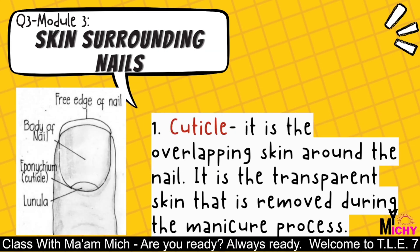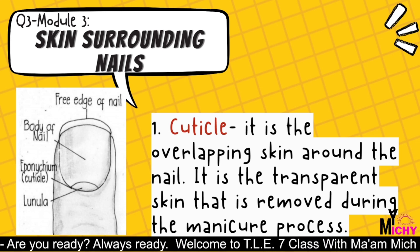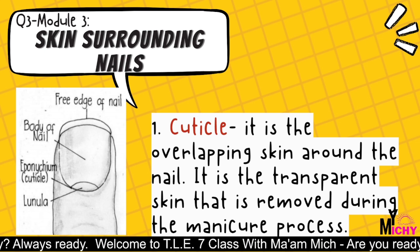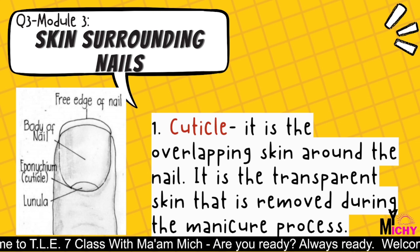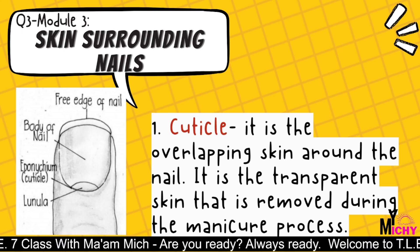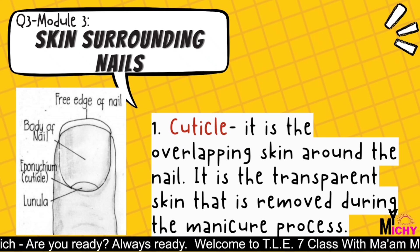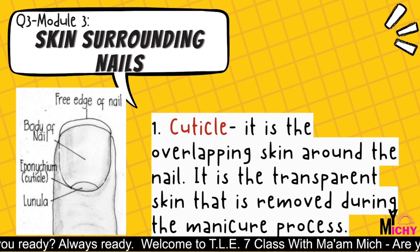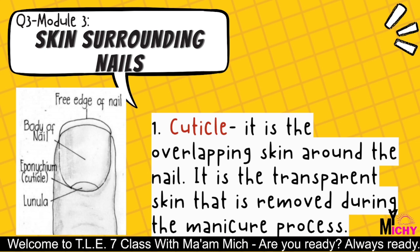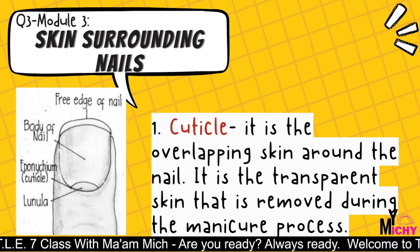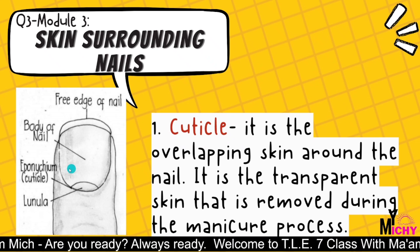The cuticle is the overlapping skin around the nail. It is the transparent skin that is removed during the manicure process. We use the cuticle nipper in order to remove the cuticle.